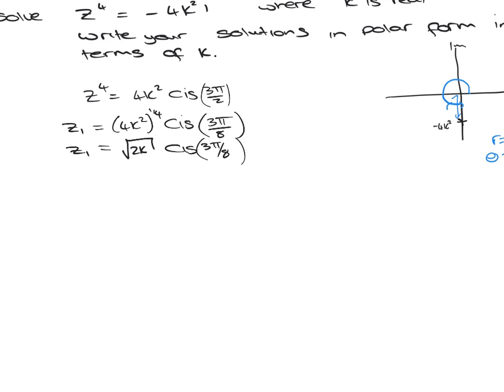Now we know there are 4 roots, and we know they're spread evenly around the Argand diagram, so each root is 2 pi over 4 radians apart. But because our argument has an 8 at the bottom, let's find that that's the same as 4 pi over 8.